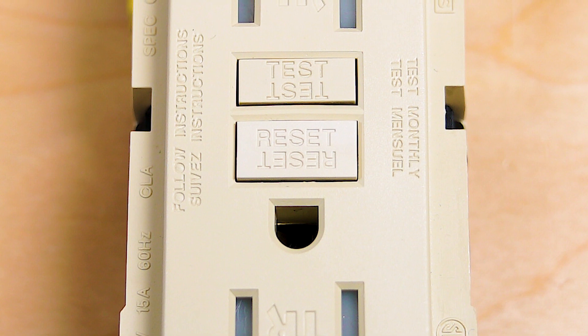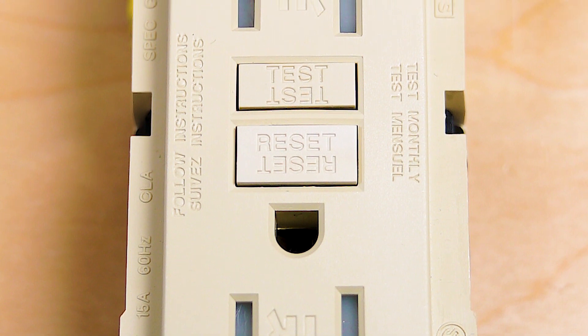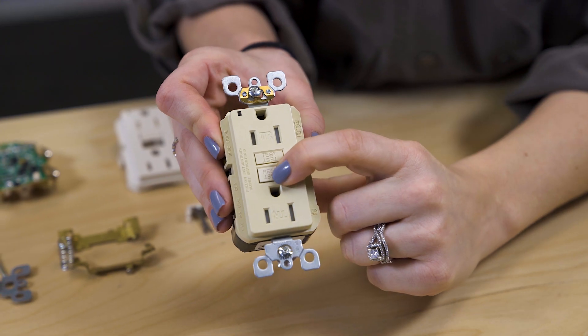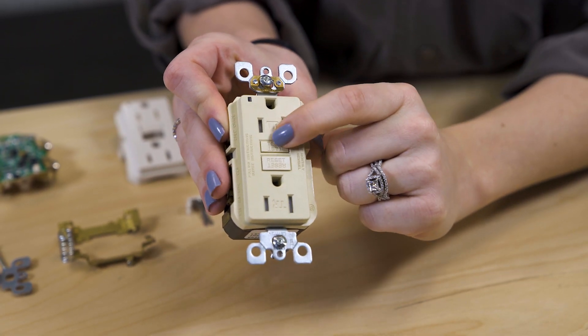When the GFCI detects a problem, it powers a solenoid which disconnects the contacts. Pushing a manual reset button re-establishes the connection to the outlet.